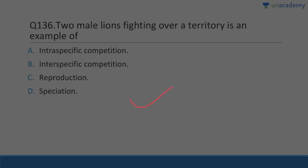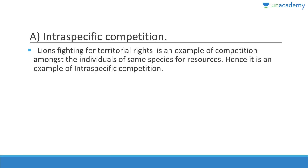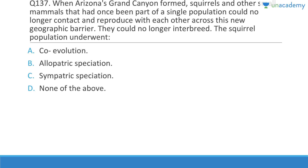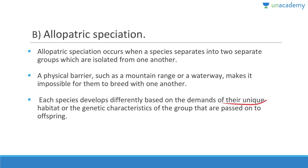Two male lions fighting over territory is an example of intraspecific competition, because they belong to the same species. When the Grand Canyon formed, squirrel populations that had been part of a single population could no longer contact and reproduce through the new geographic barrier — they underwent allopatric speciation. Allopatric speciation occurs when a species separates into two groups isolated by a physical barrier like a mountain range or waterway.